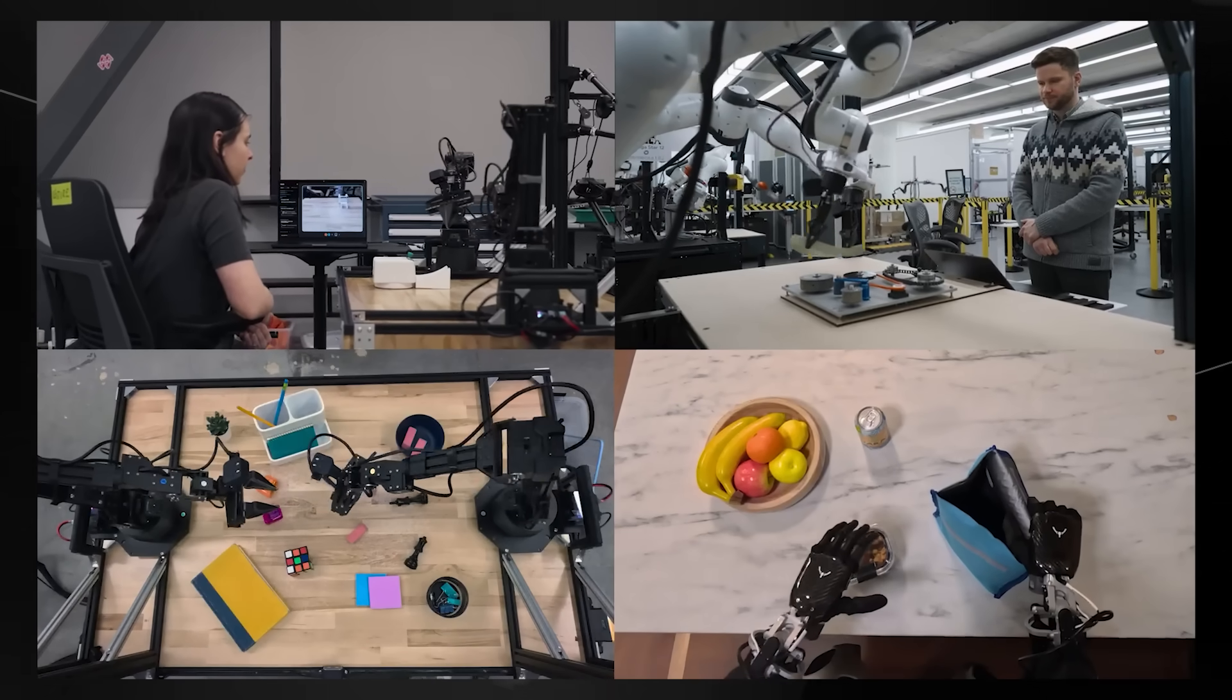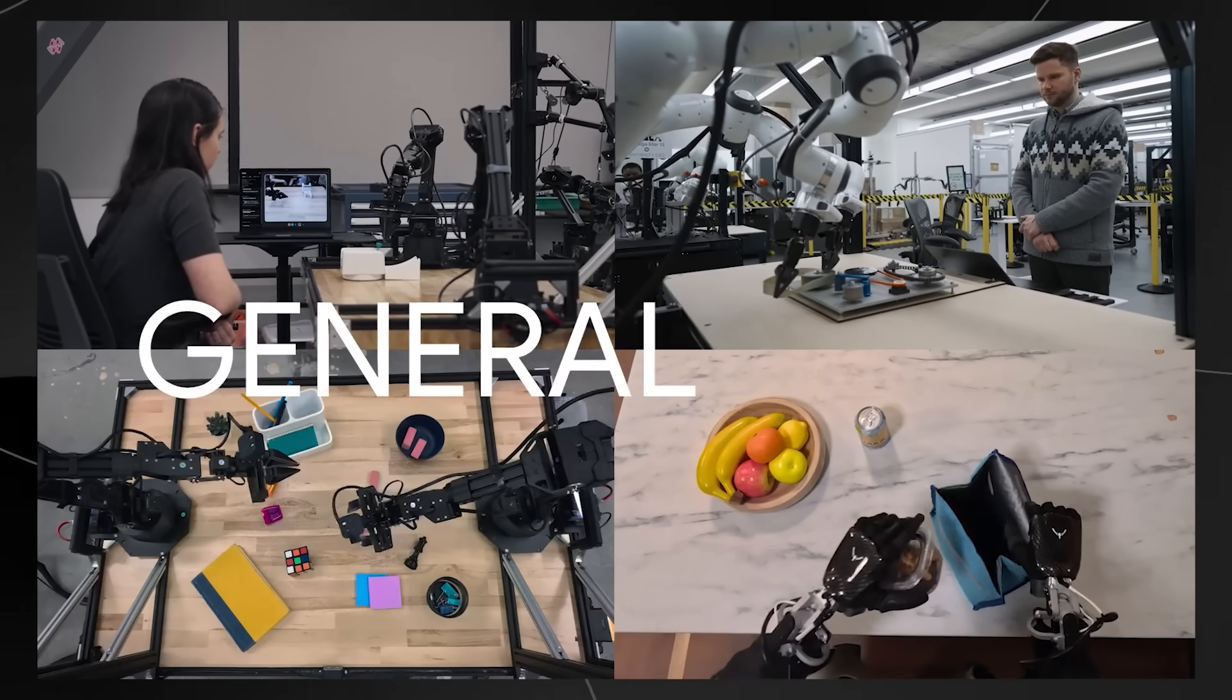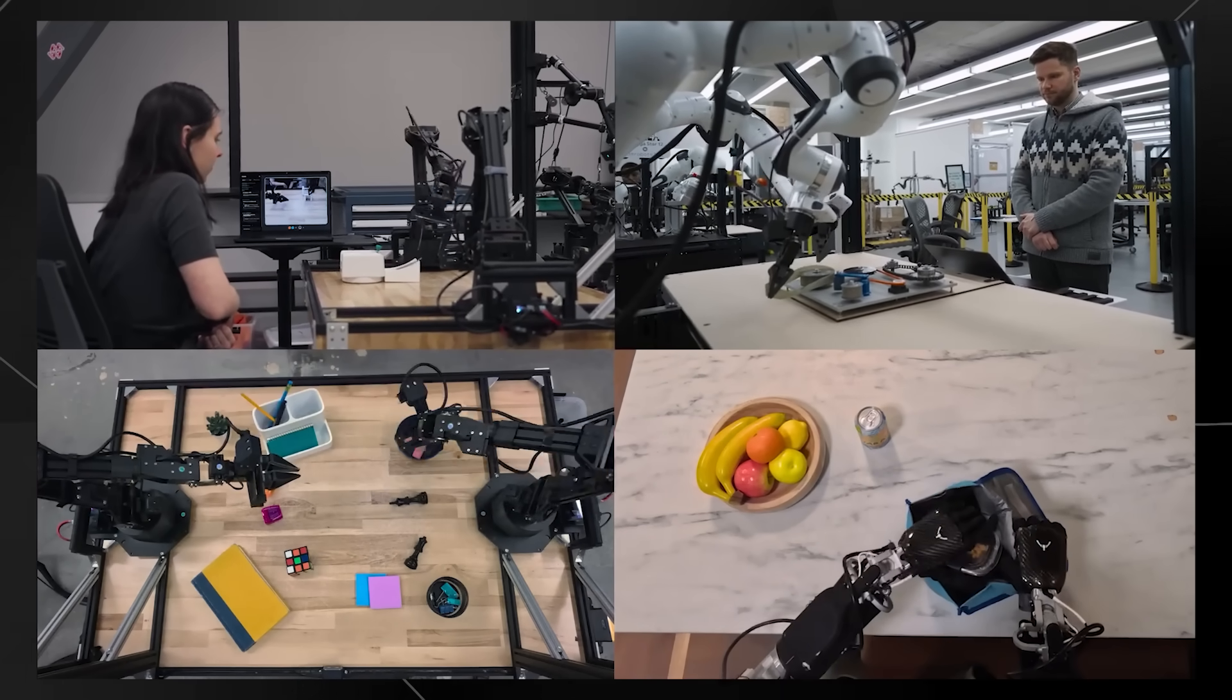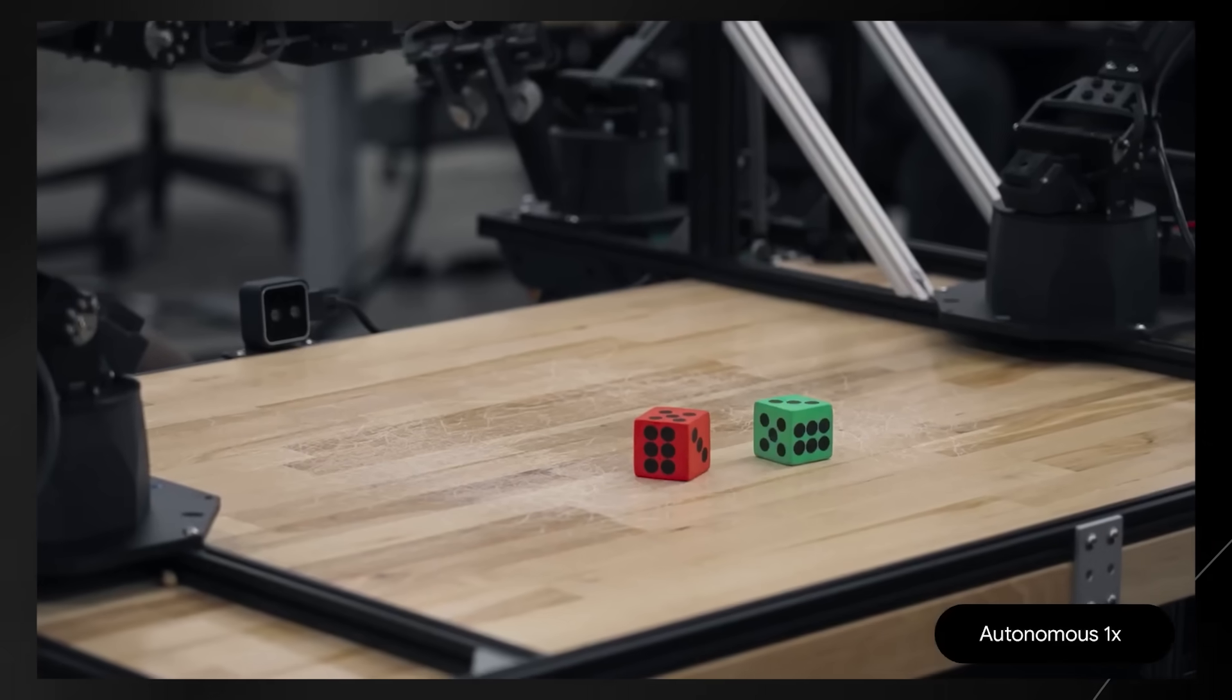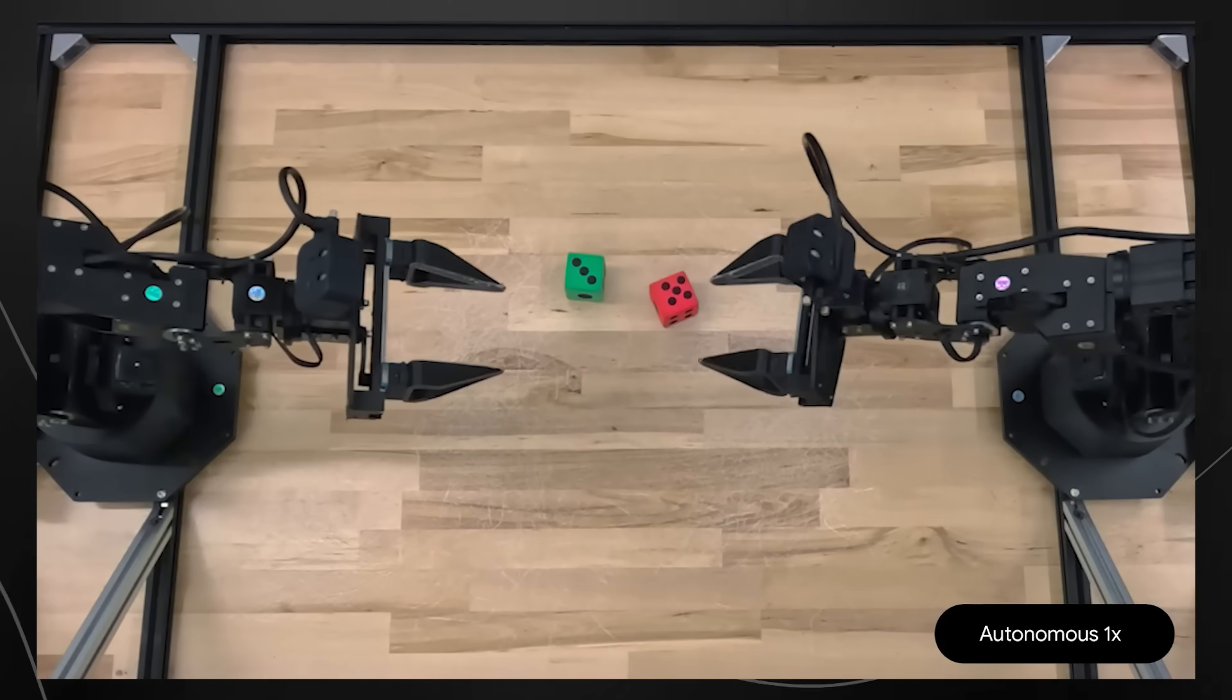Most importantly, Gemini Robotics is general. It uses Gemini 2.0's world understanding to generalize across a vast range of real world tasks. Can you flip the red die so that it matches the number on the green die?